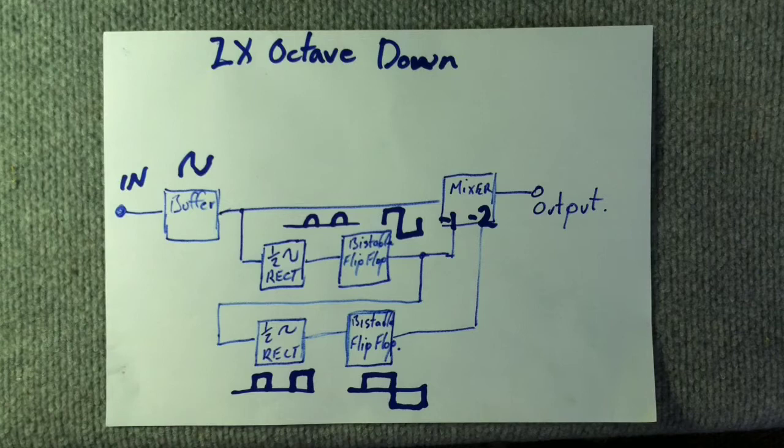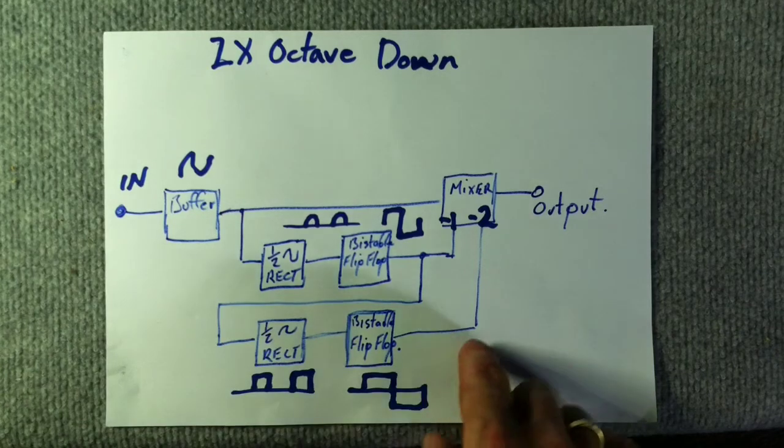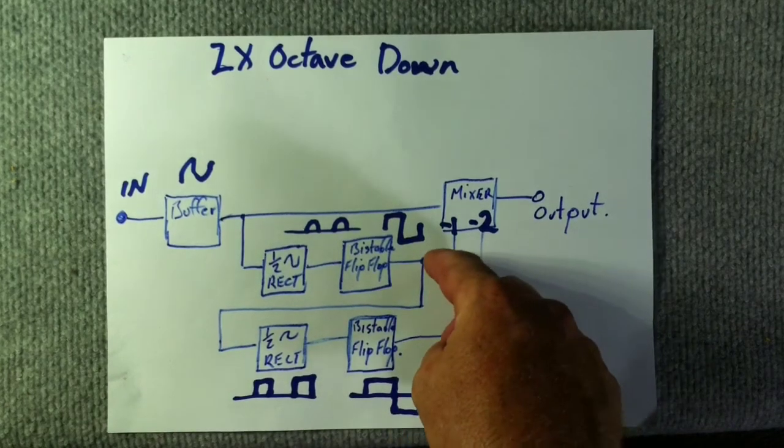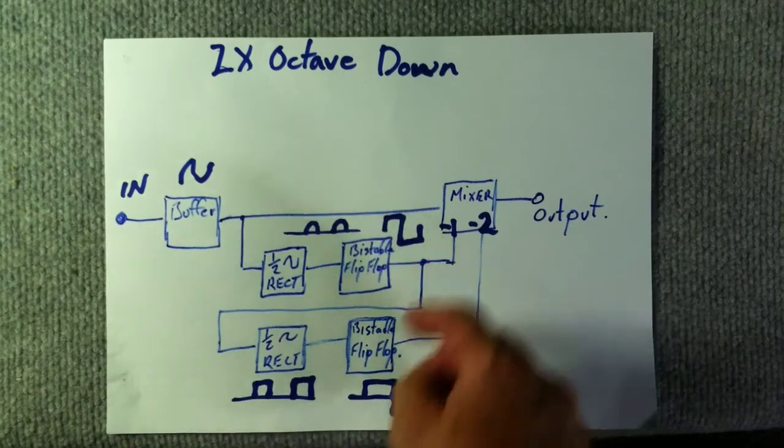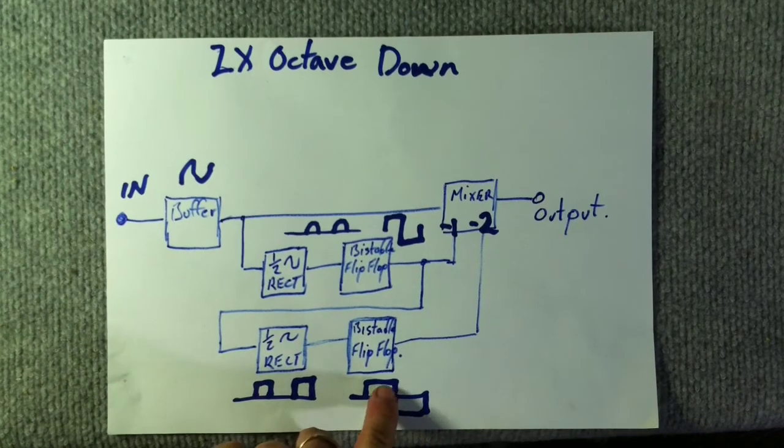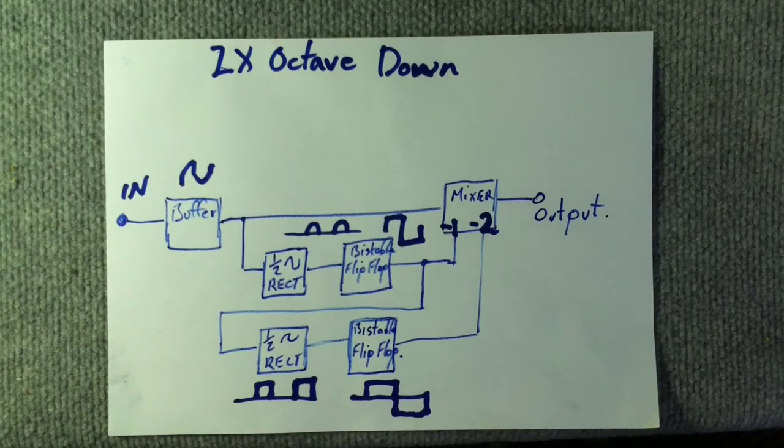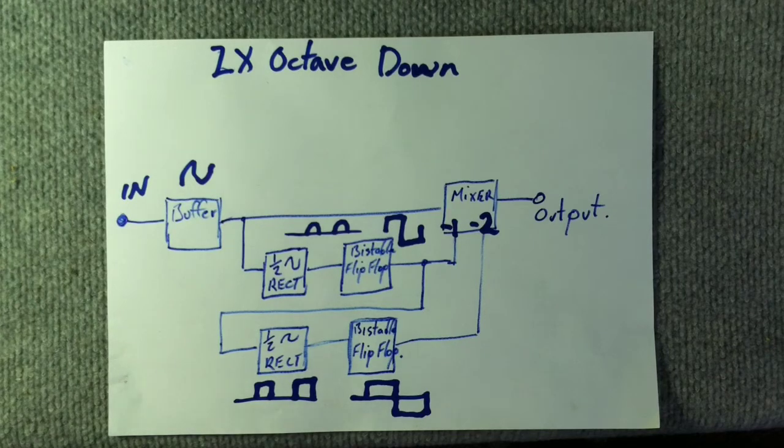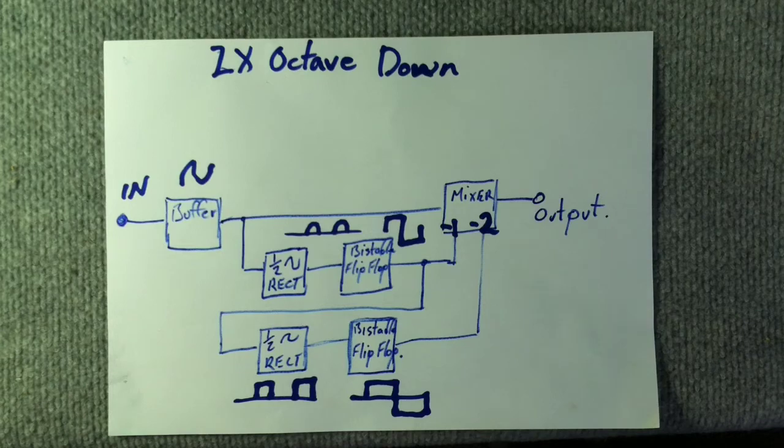Now I've considered somewhere around these two outputs from the flip-flop actually adding small capacitors to ground just to create a filter network to try and roll some of these edges off to try and make it sound a little bit more natural. I'm not sure at this stage whether I'm going to do that. We're just going to see how it pans out. But that's basically how you can make an octave down circuit.